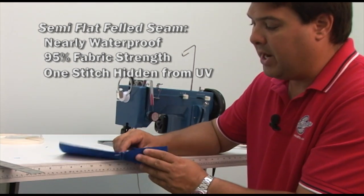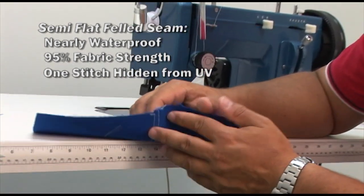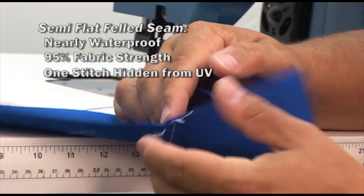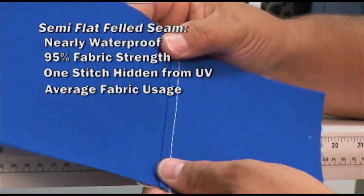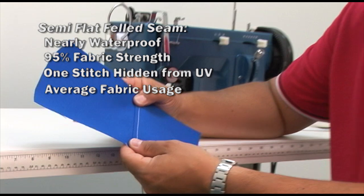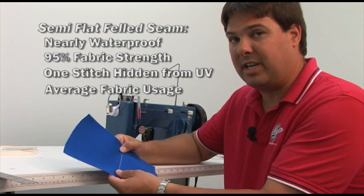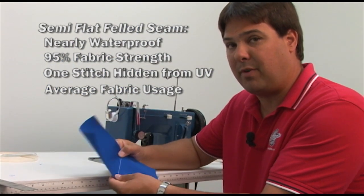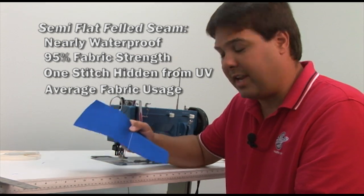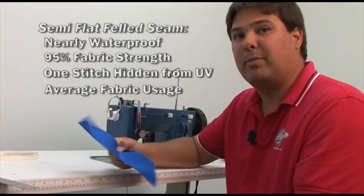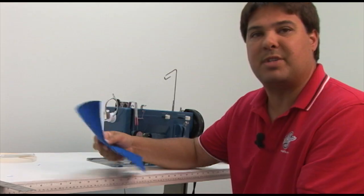From a consumption standpoint, this particular seam, if I started with a half an inch, it consumes twice that. So this stitch consumes twice the initial stitch width in from the raw edges of the fabric. In this case, one inch. So a great seam. We'll move on to full flat felled seams now.